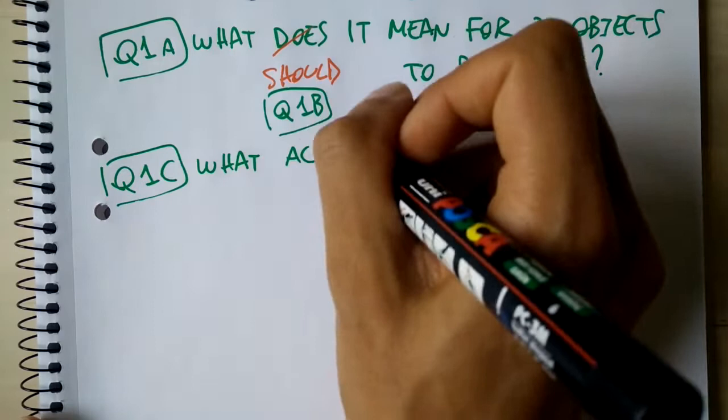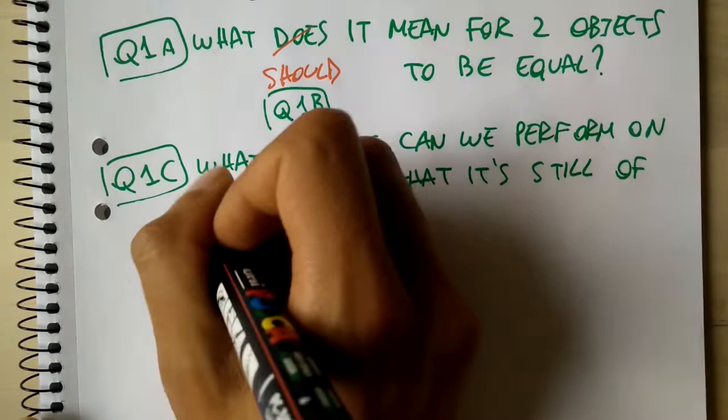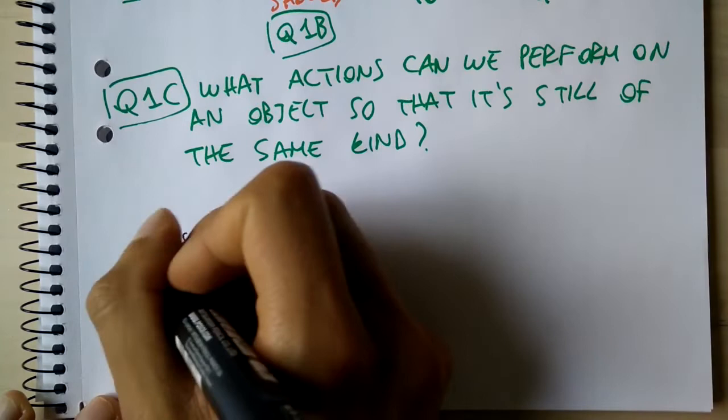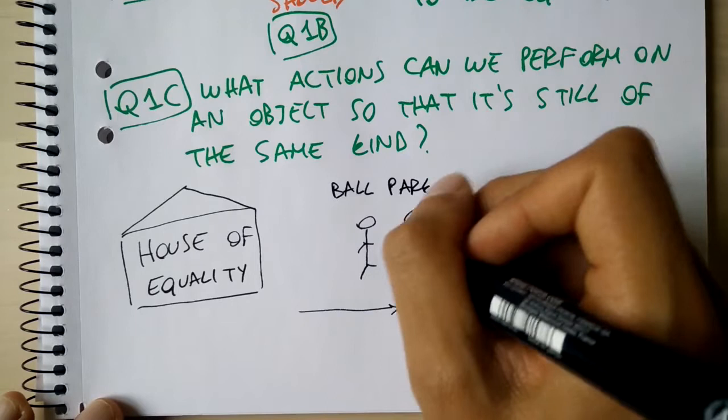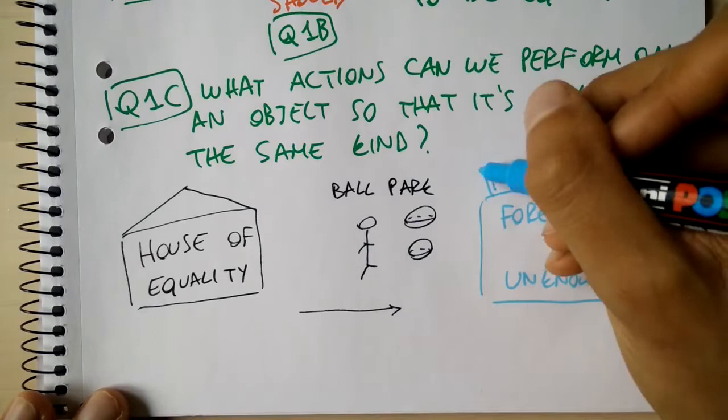One question one could ask now is, what does it mean for two objects to be equal? Or rather, since we have invented the rules ourselves, what should it mean for two objects to be equal? But let us go back to our initial intuitive notion of equality among balls. Maybe trying to start by immediately defining what equal should mean for shapes in general was a bit optimistic. However, what if we started from one object and asked, what actions can we perform on this object so that we would still consider the result to be of the same kind?